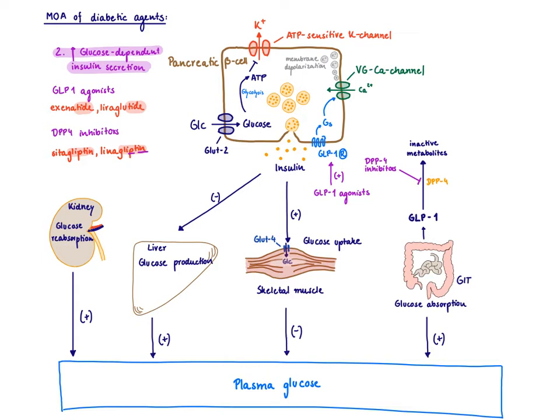The GLP-1 agonists act at the GLP-1 receptor, a G-protein-coupled receptor found on the pancreatic beta cell. It's Gs coupled, so Gs coupling leads to activation of protein kinase A, and the calcium channel is phosphorylated. If we have membrane depolarization from glucose, then we can help facilitate the influx of calcium and have insulin released via exocytosis.